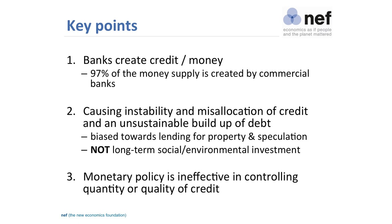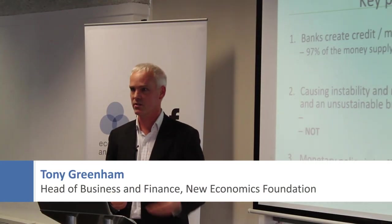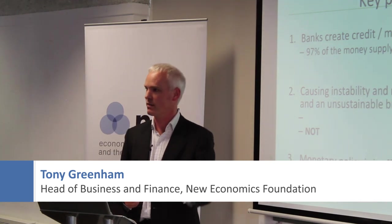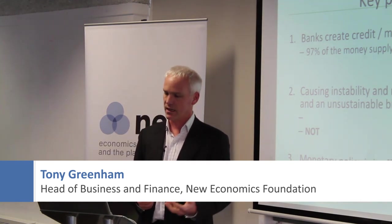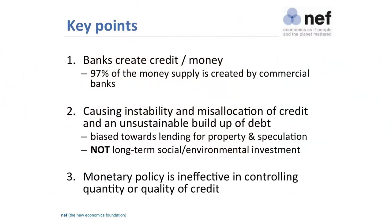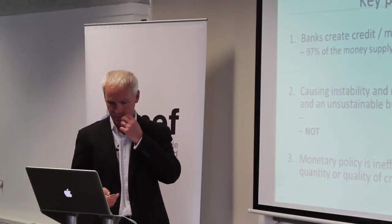These are the key points. If you can't remember anything following this slide, remember what's on here. The key points are that banks create money, and we will go through the mechanism by which banks create the money supply when they create credit. The second point is that this system has some inherent problems with it that are quite severe, so we're going to talk about what those are.